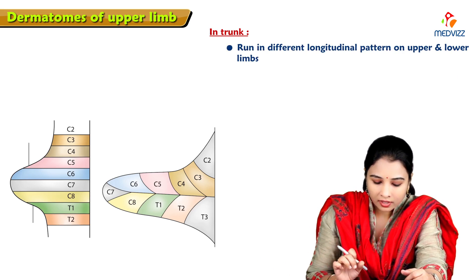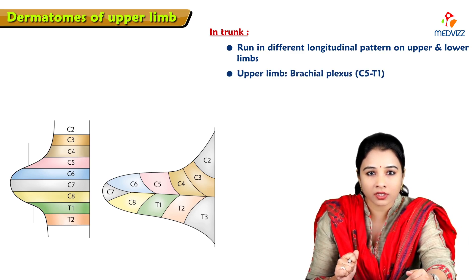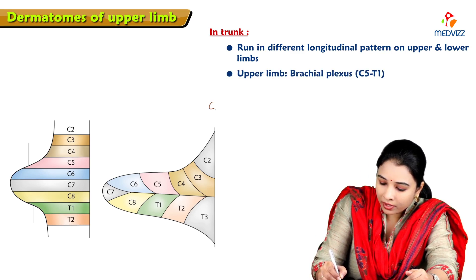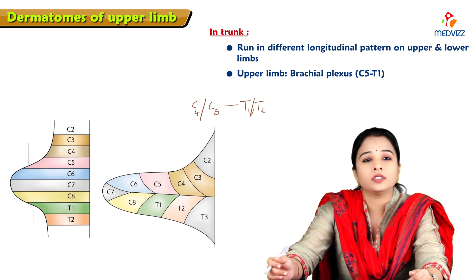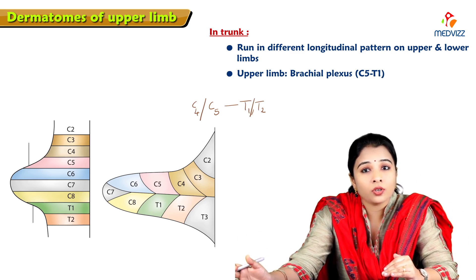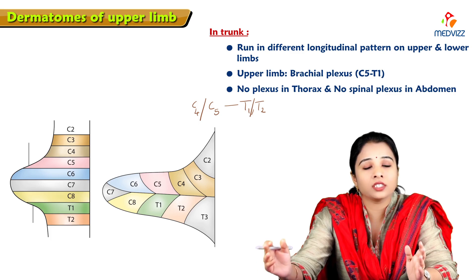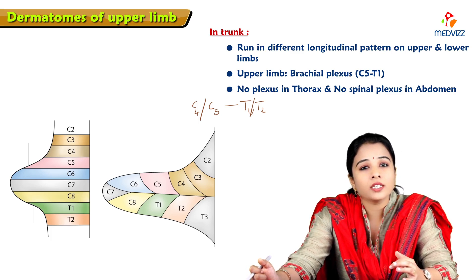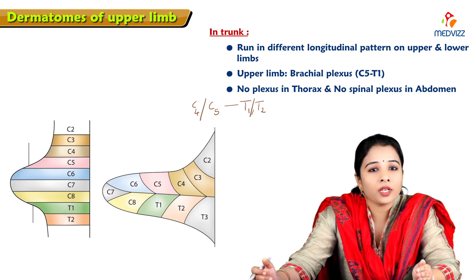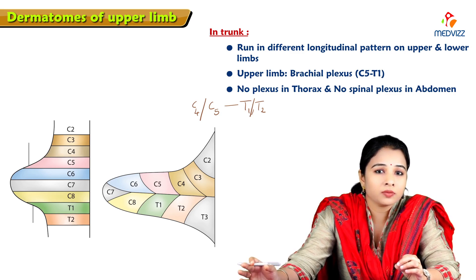The upper limb is supplied by the brachial plexus, which has root values from C4-C5 to T1-T2. The dermatomes in the thorax and abdomen are arranged evenly in a proper segmental fashion with no plexus in those regions, making them easy to identify. In contrast, the upper limb and lower limb are supplied via the brachial plexus and lumbosacral plexus respectively, making their dermatomal patterns more complex.